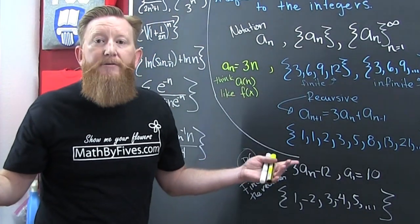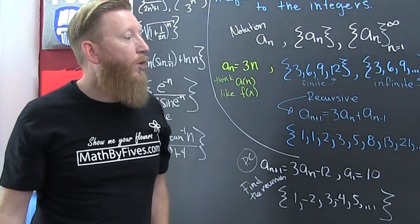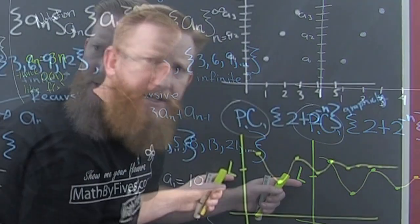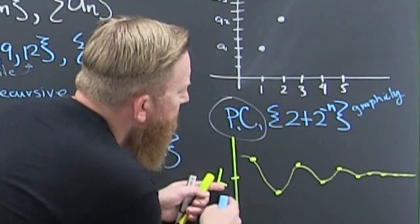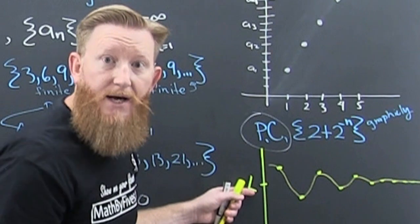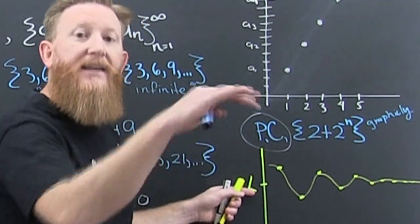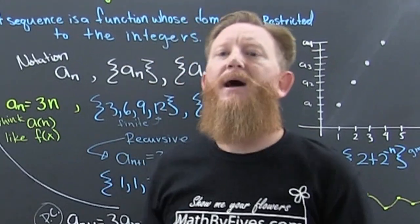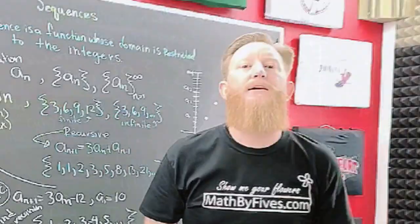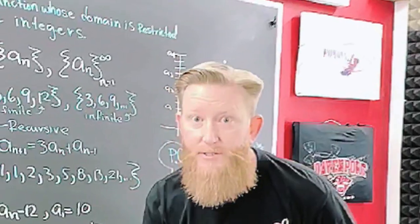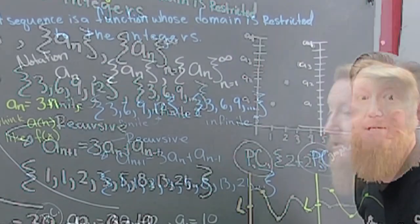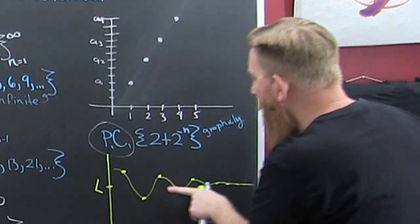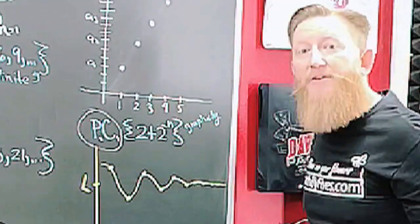Sometimes these sequences eventually go to a number. That's what I mean by a sequence converging. A sequence converging means it approaches a certain number L.